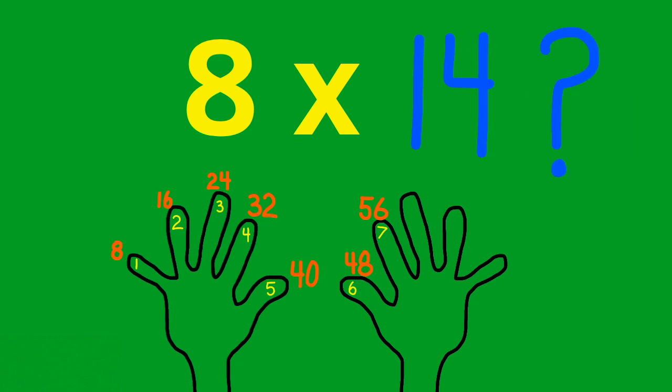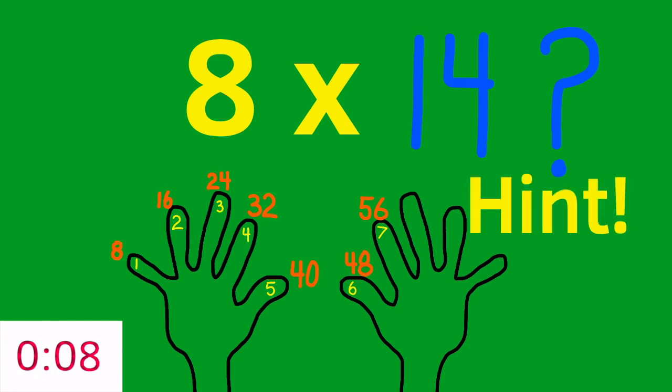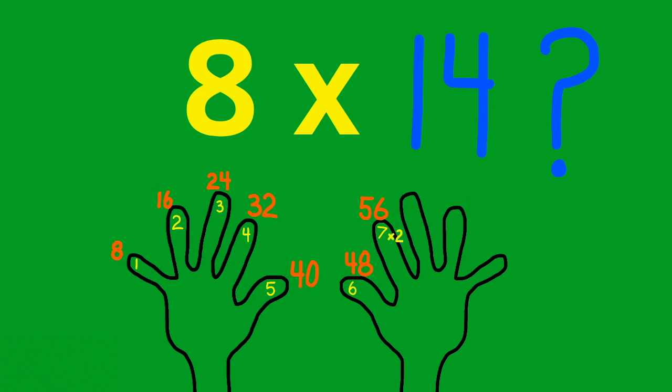Why don't you try 8 times 14? 8 times 14 is twice the size of 8 times 7. Since 8 times 7 is 56, then 56 times 2 will be equivalent to 8 times 14. 56 times 2 is 112.